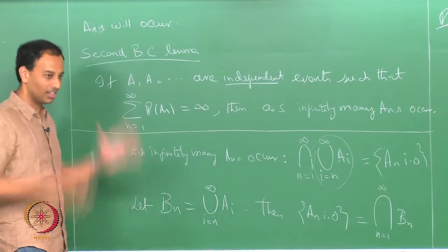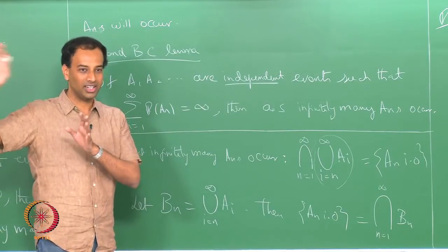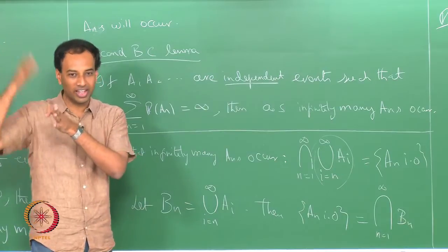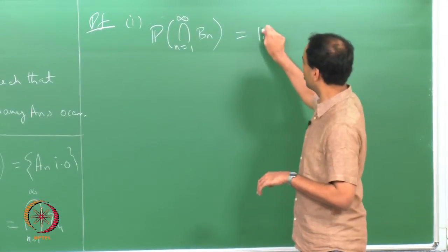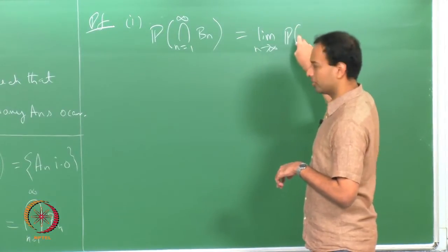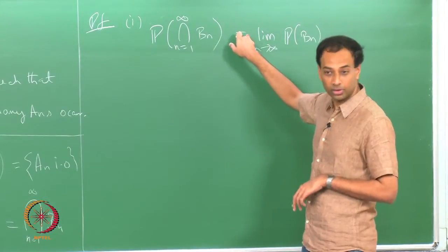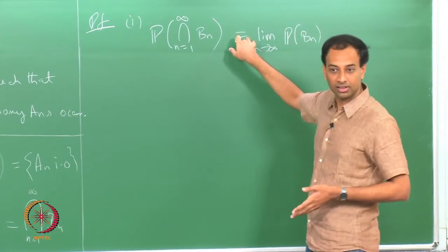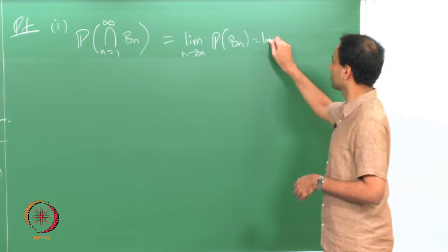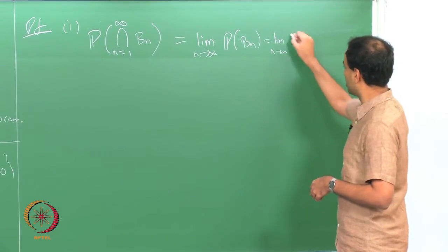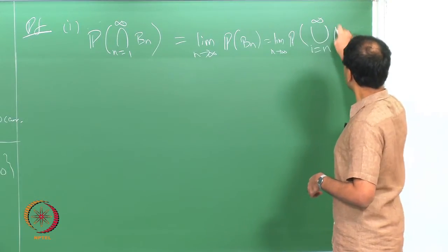The B_n's are like Russian dolls — they are nested decreasing. If at least one of A_n, A_{n+1}, A_{n+2}, etcetera occurs, that is a bigger set than at least one of A_{n+1}, A_{n+2}, etcetera occurring. So I can use continuity of probabilities to write this as a limit, and using the fact that B_n's are nested decreasing, that is equal to the limit as n goes to infinity of the probability of B_n, which is the union of A_i from i equals n through infinity.